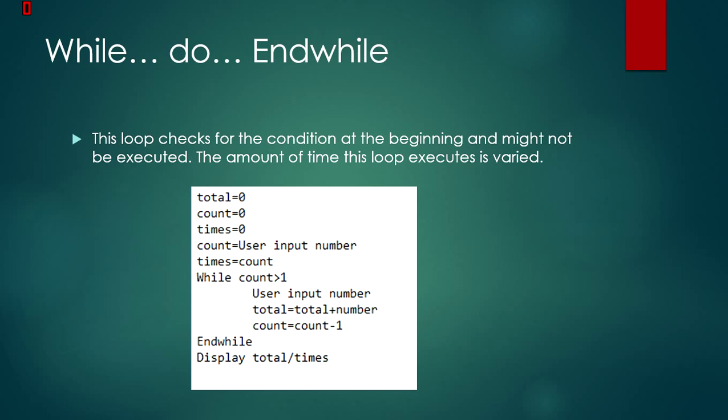This pseudocode program is similar to the one previously, except that it gives the user an option of how many times they would like to input a number. While count is greater than 1, user inputs a number, adds that number onto total, and it subtracts 1 from count. After count reaches 1, it will display the total number of times divided by total, which is the average.